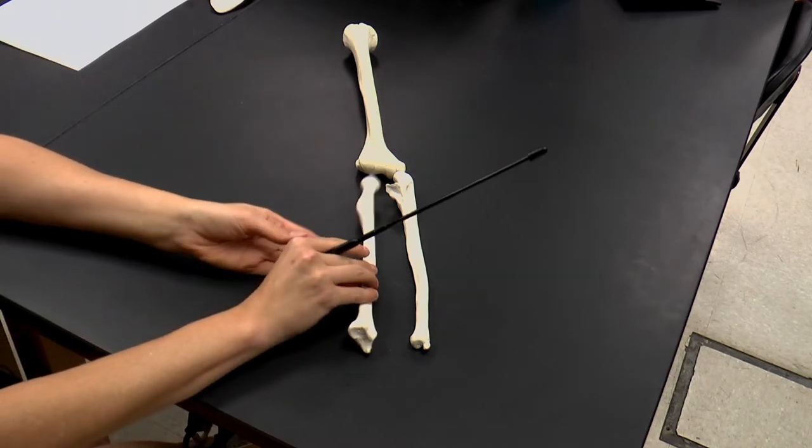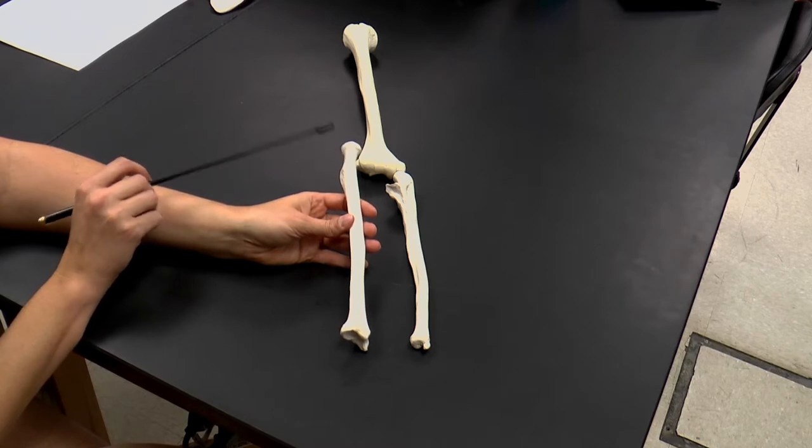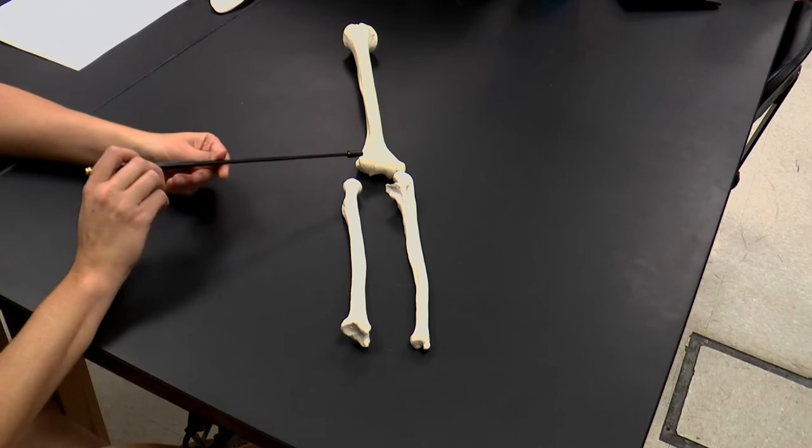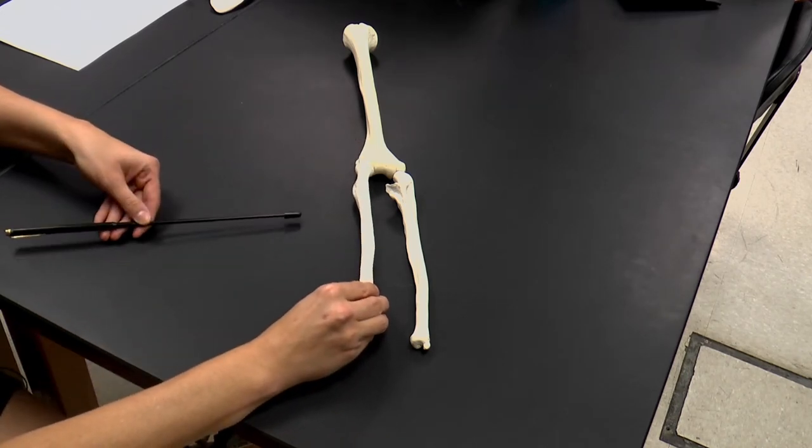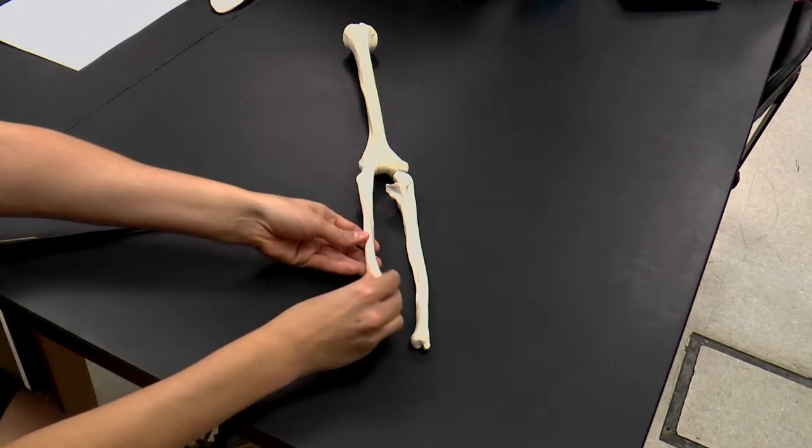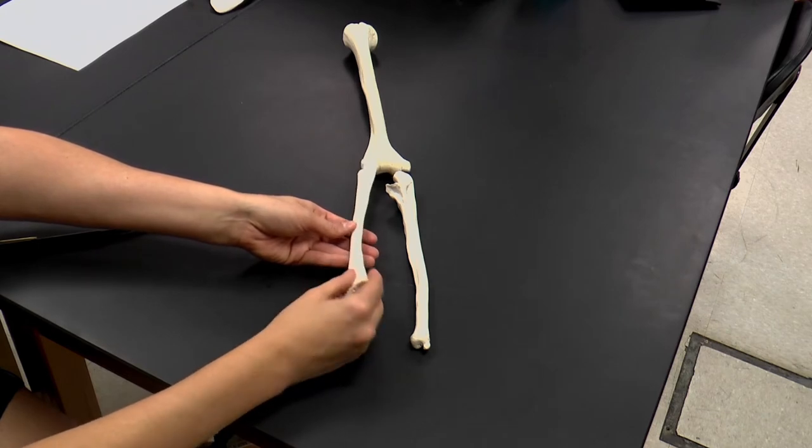Now there's a part of the radius we definitely want to look at, and it's this most proximal part closest to the body. This is called the head of the radius. And it articulates with the capitulum of the humerus. The head of the radius and the capitulum of the humerus would articulate like this, and it would enable our elbow to rotate like this.